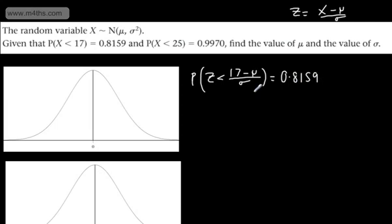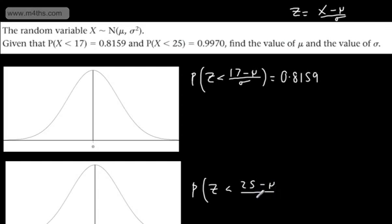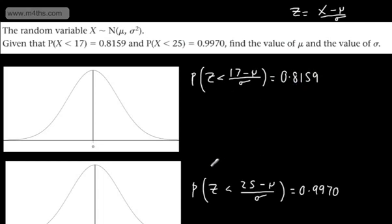For the next case, we're going to have the probability that z is less than 25 minus mu divided by sigma, equal to 0.9970. All we need to do is go to our standard normal tables to find the corresponding value and then simply set up a simultaneous equation.